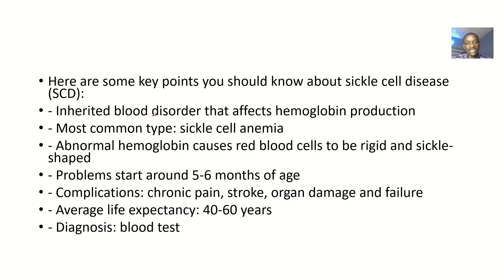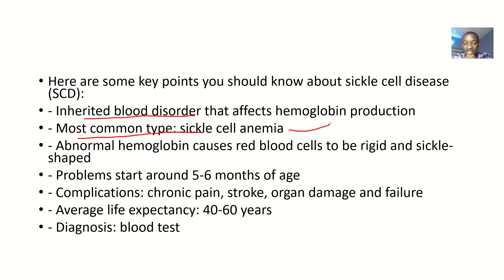So these are key points about sickle cell disease: it is an inherited disorder that affects hemoglobin. The most common type is sickle cell anemia, which is why people tend to confuse sickle cell disease and sickle cell anemia — but they are actually two different things. There is abnormal hemoglobin, which causes red cells to become rigid and sickle-shaped.